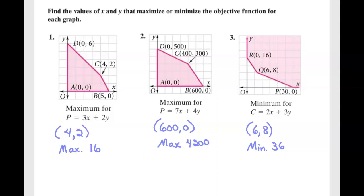We focused on examples one and three, and what you were supposed to do was look at those vertices and use the objective function to try to find the min or the max based on those vertices.